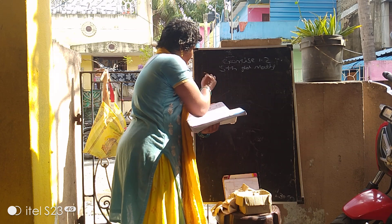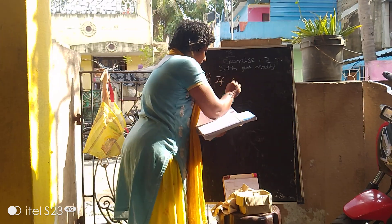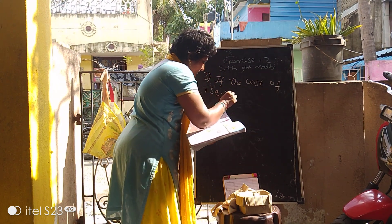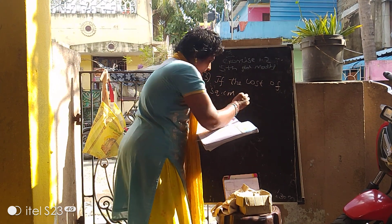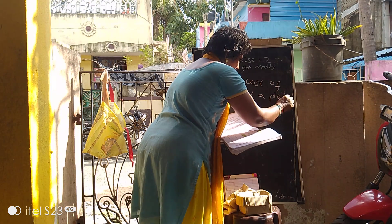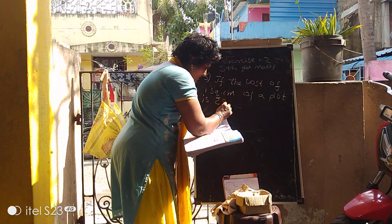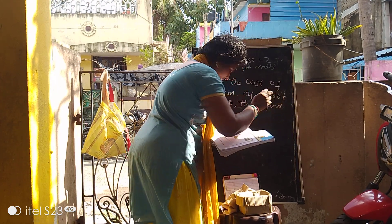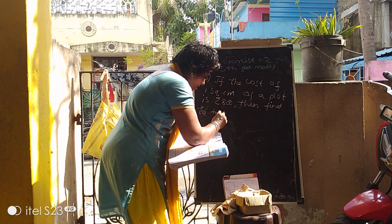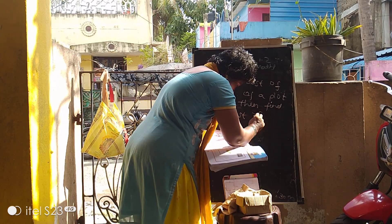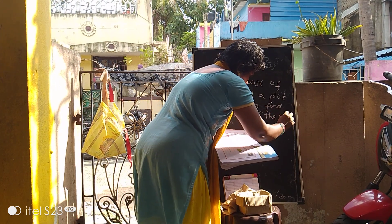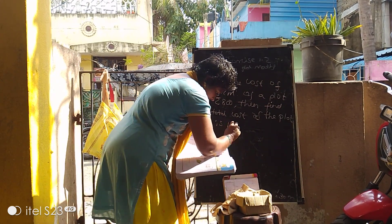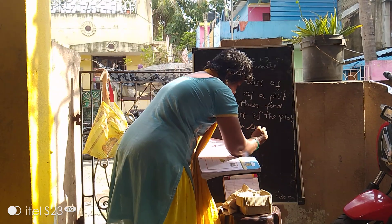Problem Number 3: If the cost of 1 square centimeter of a plot is Rs. 800, then find the total cost of the plot that is 15 centimeters long.